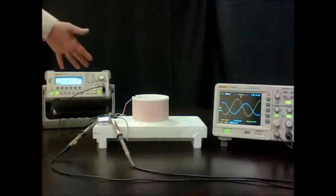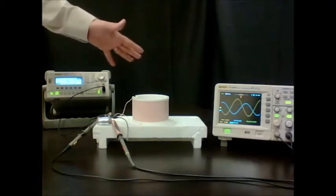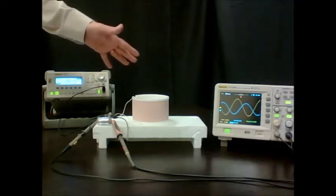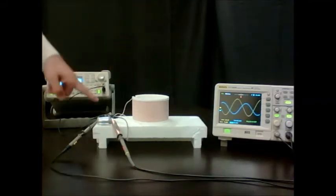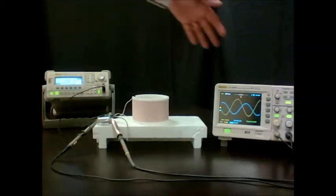A signal generator, an LC resonant circuit made of a serial assembly of a coil and a capacitor, and finally sensing and visualizing means: here, two probes and a scope.